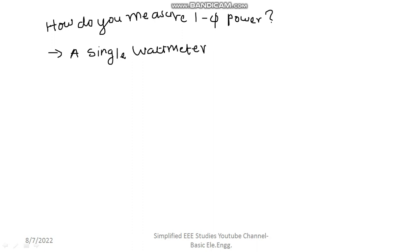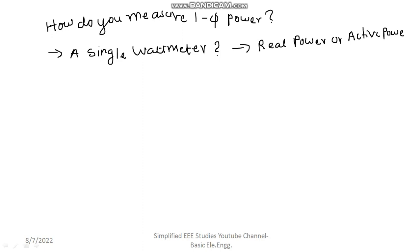What is a wattmeter? What do you understand by the wattmeter? A wattmeter is a device which is used to measure real power. The wattmeter reads the real power — real power, or you can call it active power or true power. All are the same. You can write it as true power.